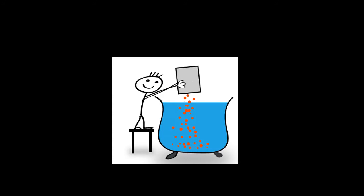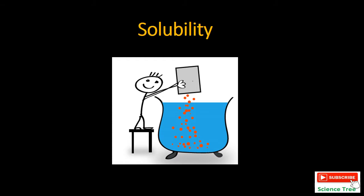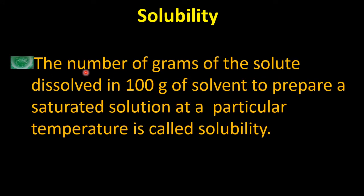Welcome to Science Tree Channel. Today's topic is solubility, from chapter number six. Solubility is when one substance is dissolved into another in such a way that they form a homogeneous mixture. More precisely, solubility is defined as the number of grams of solute dissolved in 100 grams of solvent to prepare a saturated solution at a particular temperature.